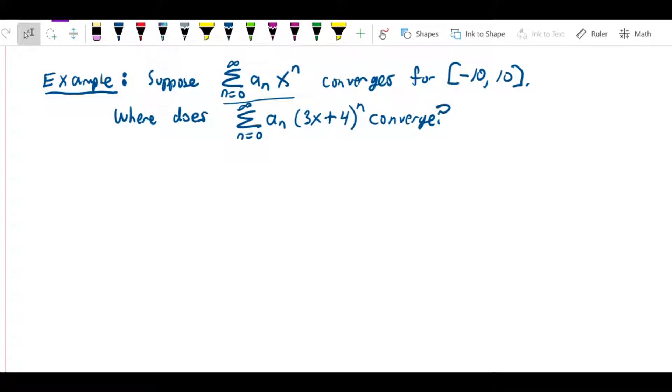So let's do a problem that has to do with power series, but it's a little bit more abstract. So let's suppose that we know that the series from n equals 0 to infinity of a_n x^n converges for the interval negative 10 to 10.